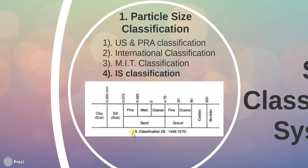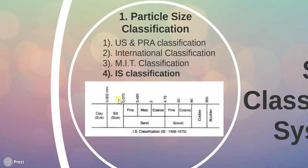This picture is showing IS classification. It is taken from IS 1498-1970. This is showing if particle size is lesser than 0.002 mm, they will be called clay. If particle size is 0.002 to 0.075 mm, then it is silt.